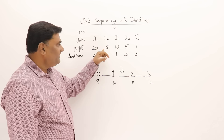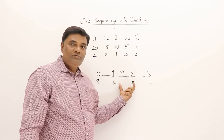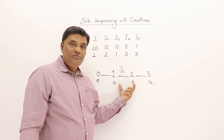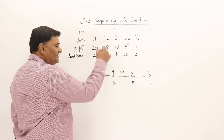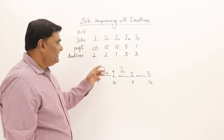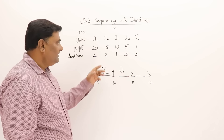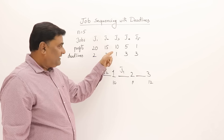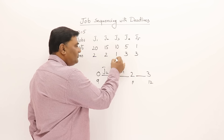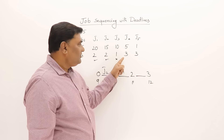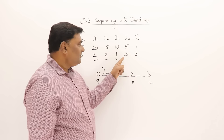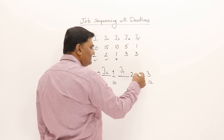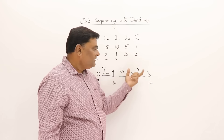The second highest profit is 15 with deadline two. Slot one to two is already occupied, so we check the earlier slot — zero to one is available, so job two goes there. The next job has deadline one — slot zero to one is already occupied, so this job is rejected. Job four has deadline three, so we assign it to slot two to three.